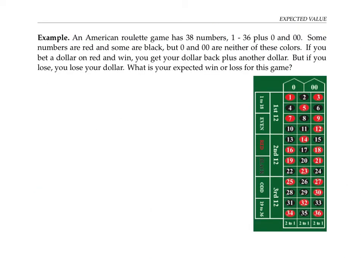Let's do another gambling example. An American roulette game has 38 numbers, one through 36, plus zero and double zero. Some numbers are red and some numbers are black, but zero and double zero are neither of these colors, they're green. So one way that you can bet is you can bet on red. So let's say you bet $1 on red, then how the game works is if red comes up on the wheel, then you win your dollar back plus another dollar. But if black or a green number comes up, then you lose your dollar.